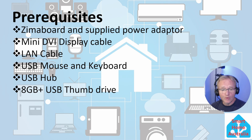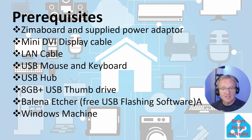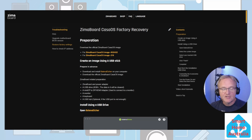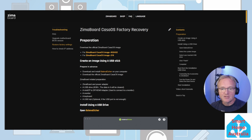You'll also need an 8 gigabyte or larger USB thumb drive to load your image, a copy of Balena Etcher — free software used to flash CasaOS onto the USB thumb drive — and a separate Windows machine to download the image and flash the drive. This process is documented on the Zimmer board website; links are in the description.